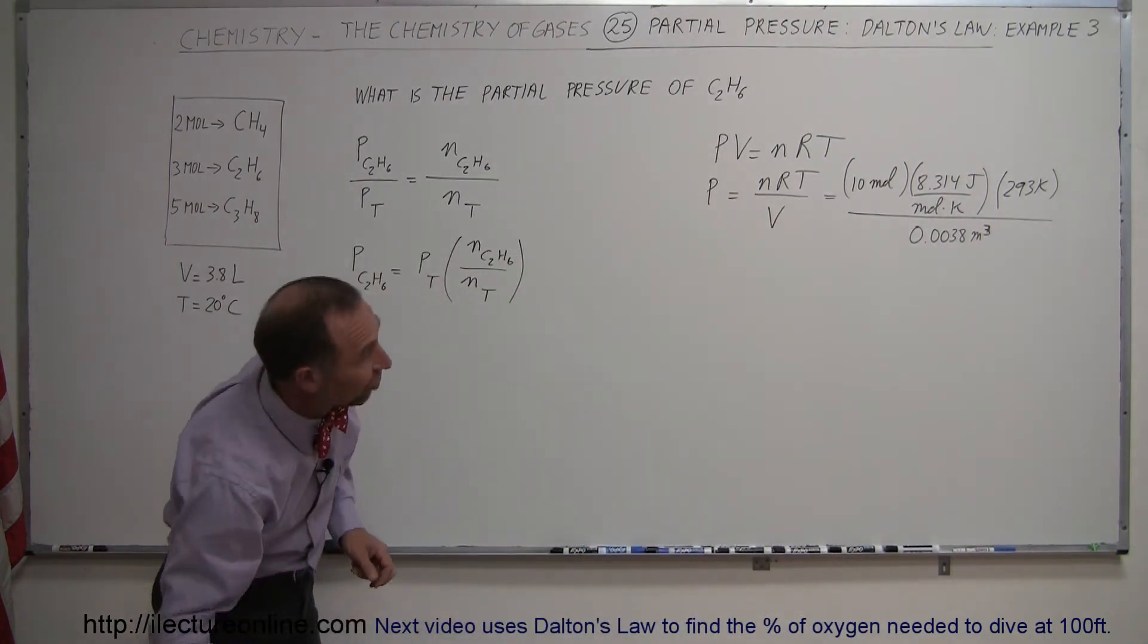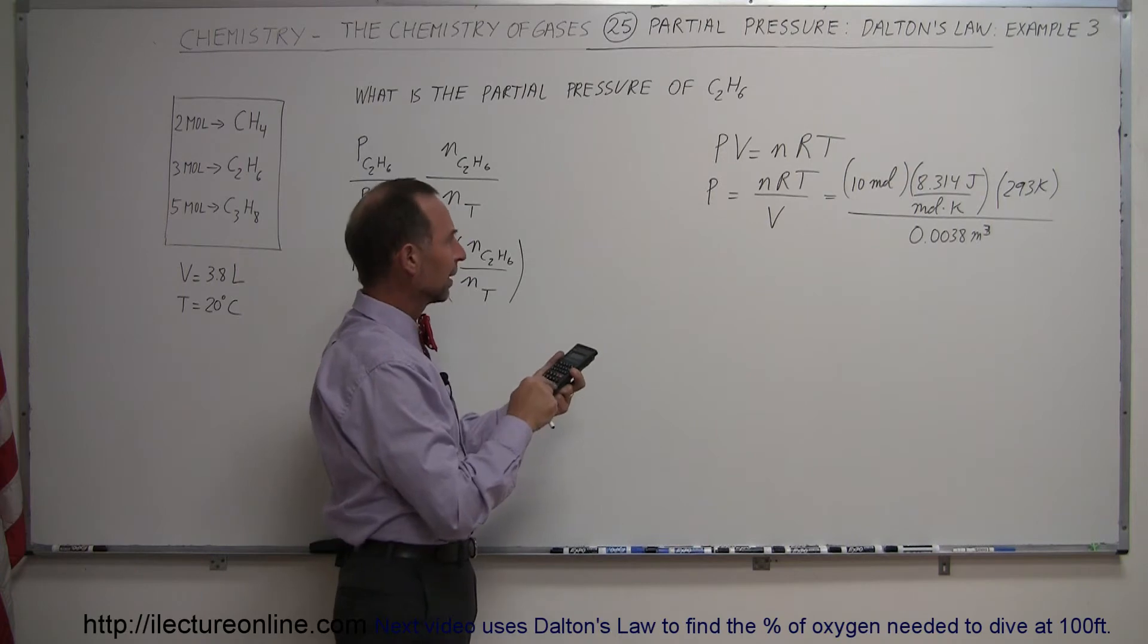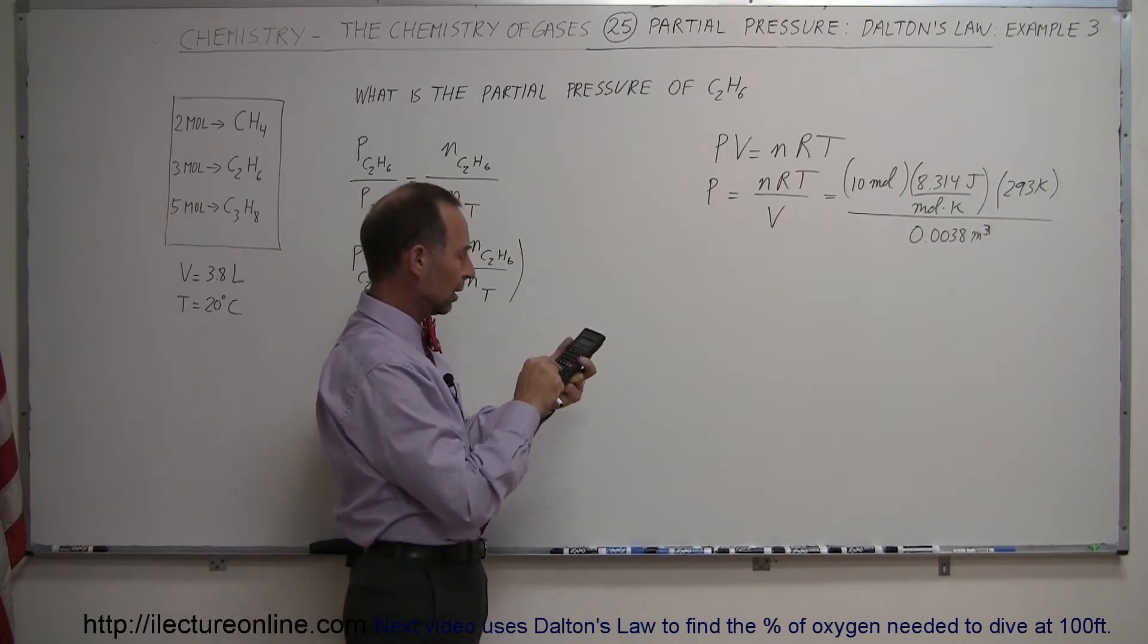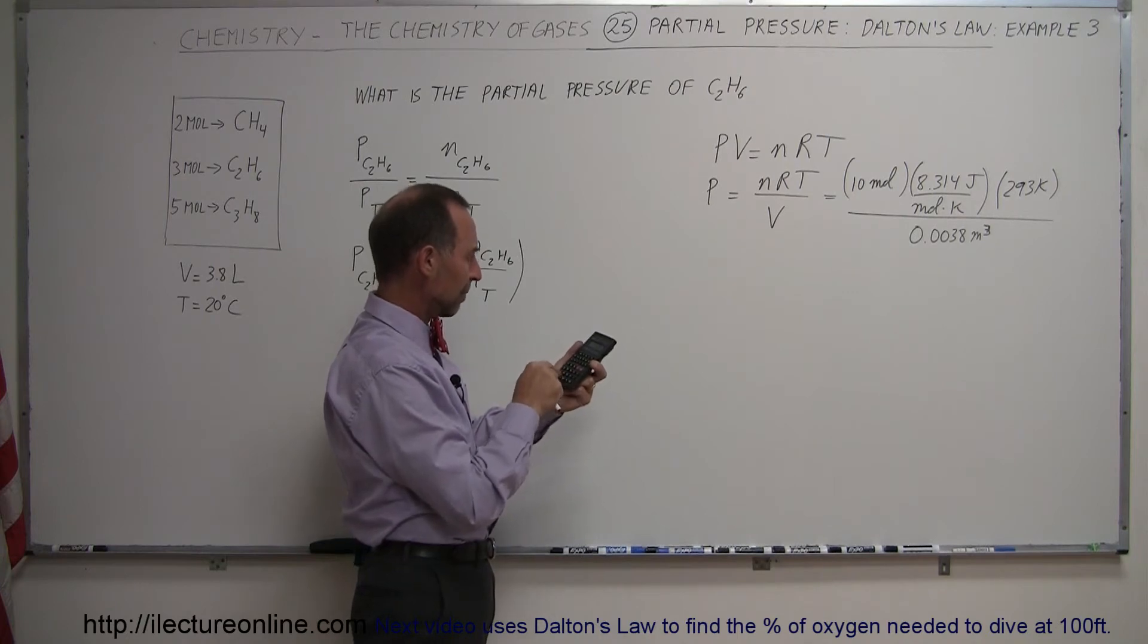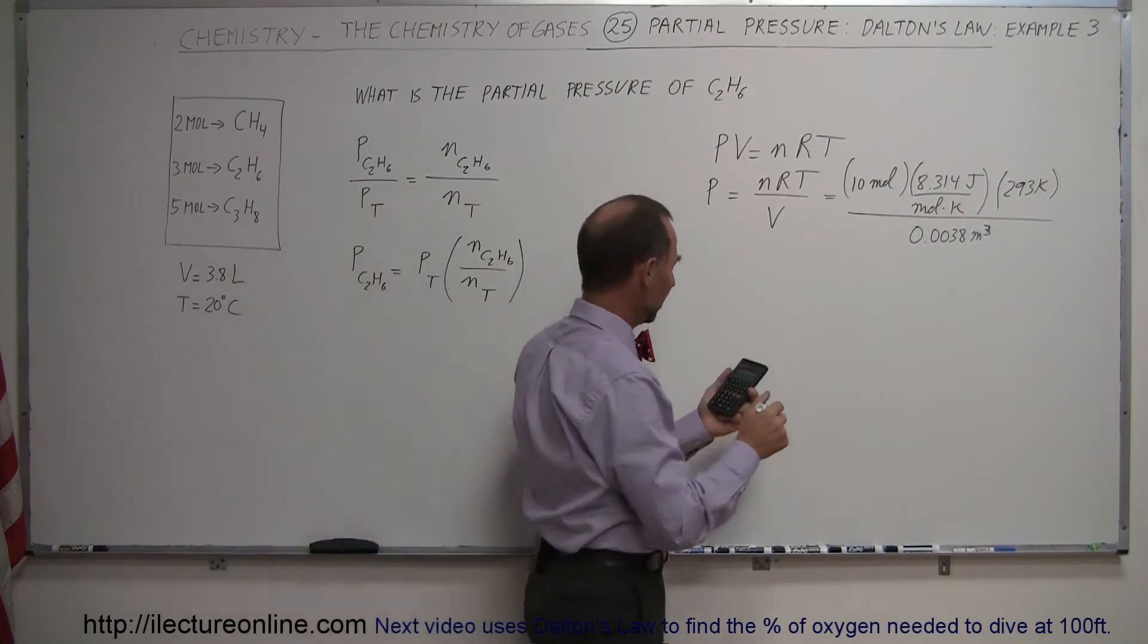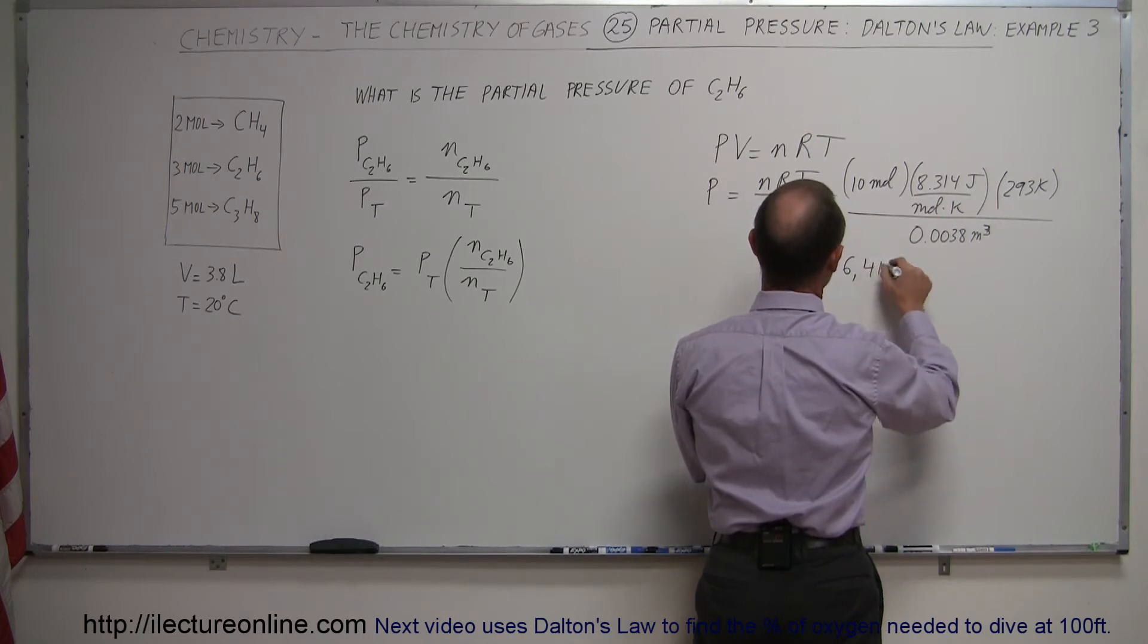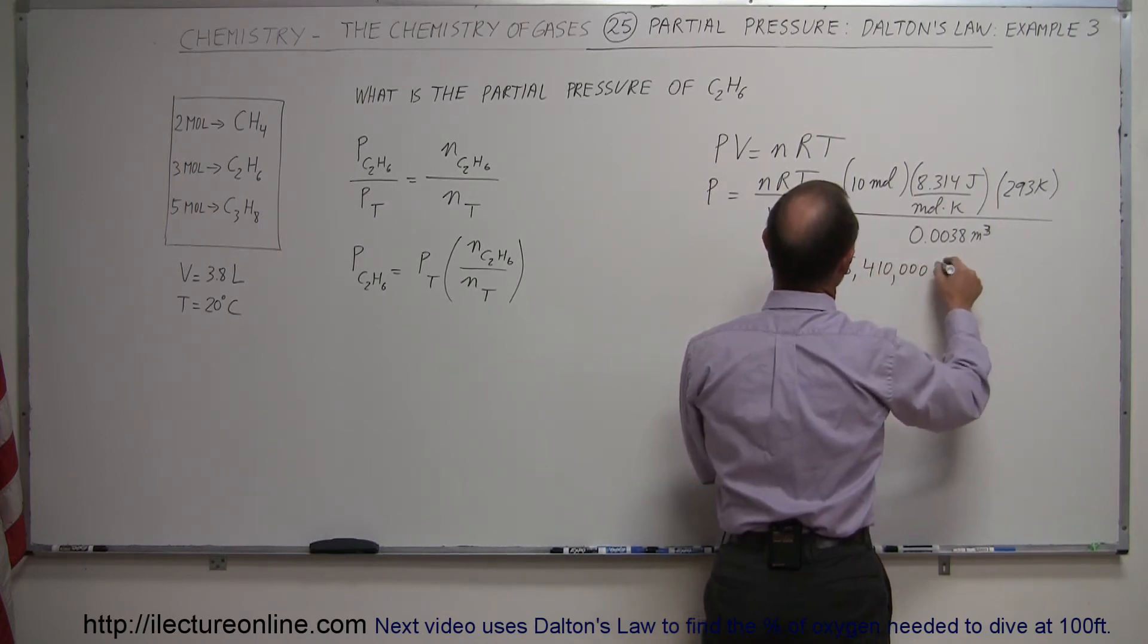This way we'll get the pressure in terms of Pascals, which are the standard units of pressure. So 10 times 8.314 times 293 divided by 0.0038 equals, and that gives us a total pressure of 6,410,000 Pascals.